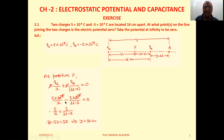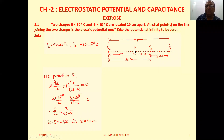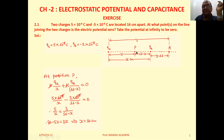Q2 is a negative charge, so the negative sign appears. Taking 10⁻⁸ common and cancelling it on the right-hand side, we get 5/x = 3/(16 - x). Solving this gives x = 10 cm. So point P between the two charges where the potential is zero is located at 10 cm from charge Q1, or 6 cm from charge Q2.